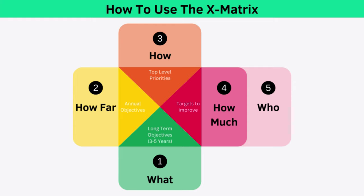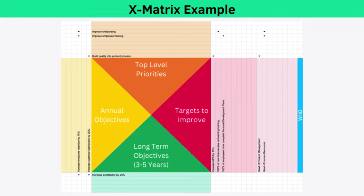Let's look at what this example looks like in an actual X Matrix template with a little extra detail added. You can see that our long-term objective is to increase profitability by 25%. Following the dots, to do that we need to hit two objectives this year: increase customer satisfaction by 25%, and increase employee retention by 10%. Following the dots further, to increase employee retention we have two top-level priorities, with KPIs shown and the head of human resources responsible for them.